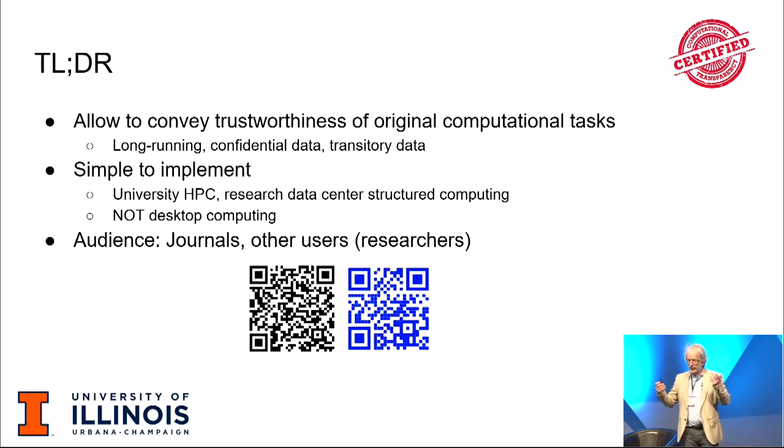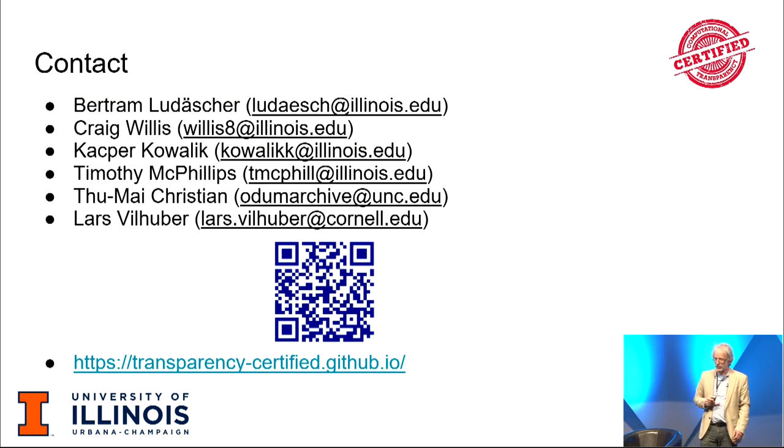So, the idea is that we can convey the trustworthiness of the original computational task. We don't have to redo it, but we're going to get all the benefits that the review that is done by data editors is done. It should be simple to implement. The primary audience are going to be journals that are going to be consumers of this to sort of enhance the reliability of the artifacts that they do. But the secondary users are going to be other researchers who are going to be able to say, this actually ran. And knowing that it actually ran and is complete, maybe it's worth my while to invest in it to actually get it to work again as well. And so, that's sort of our point. Here's all of our names. Contact any of us. And that QR code will take you to our current project site, which obviously will be evolving over the next couple months. Thank you.